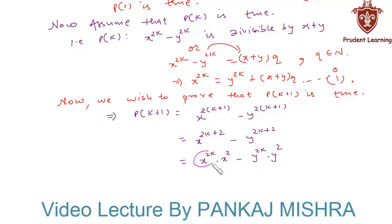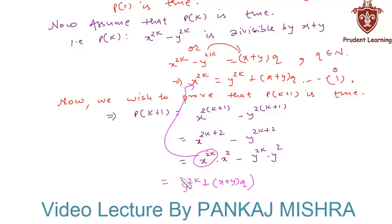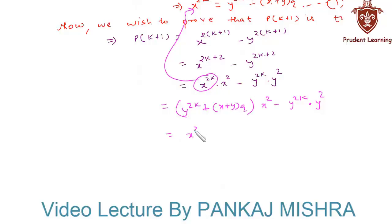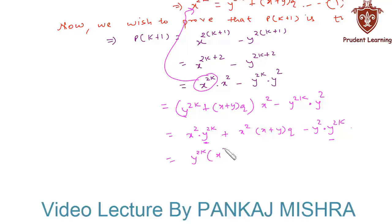Now substituting the value of x to the power 2k from equation 1, we get: (y to the power 2k plus (x plus y) times Q) times x squared, minus y to the power 2k times y squared. Expanding, this equals x squared times y to the power 2k plus x squared times (x plus y) times Q minus y squared times y to the power 2k. Taking y to the power 2k common from the first and last terms gives y to the power 2k times (x squared minus y squared), plus x squared times (x plus y) times Q.